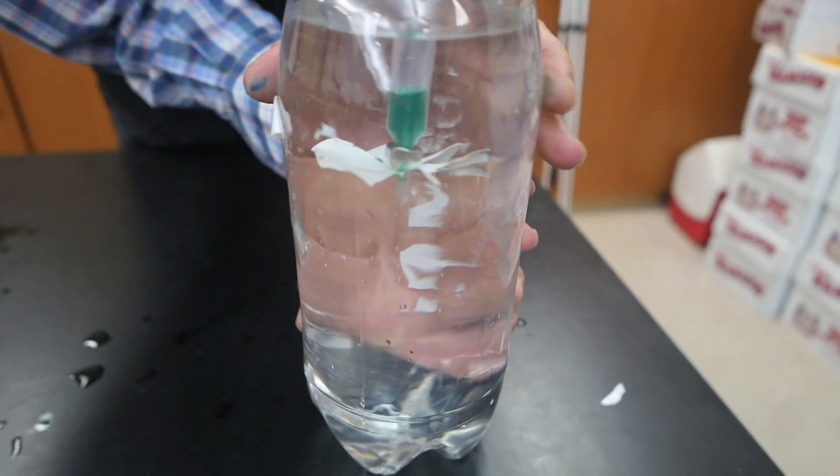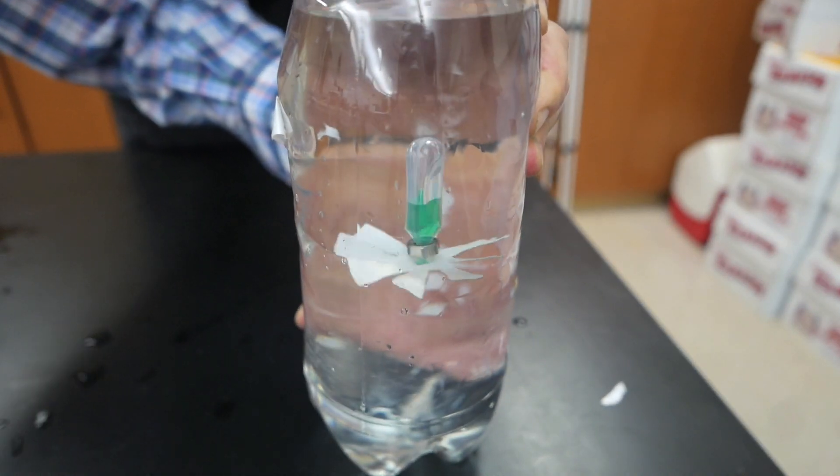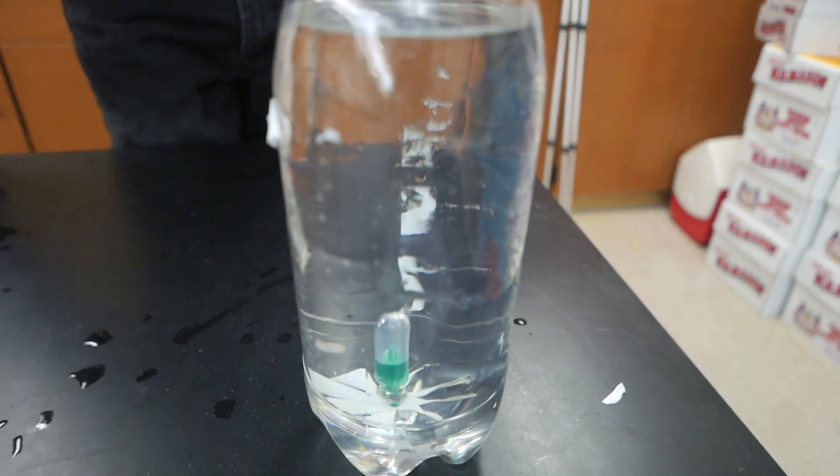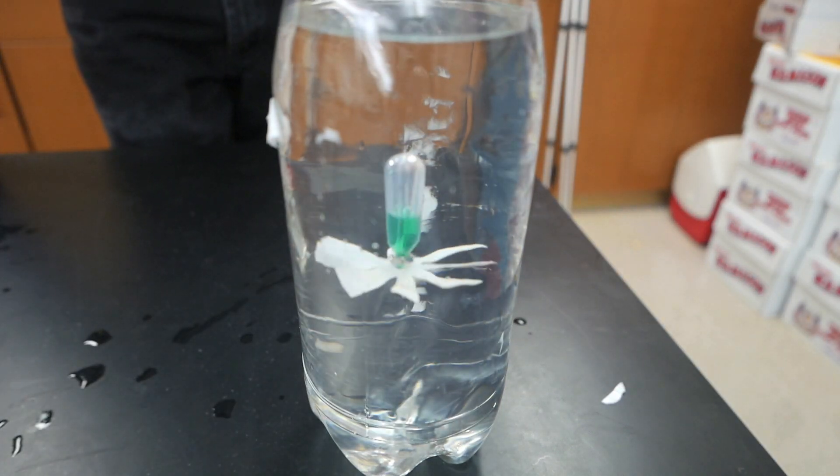Now we can then take this diver and make it spin by adding a set of fan blades. Squeeze it, it turns in one direction as it goes down, and the opposite direction as it comes back up.